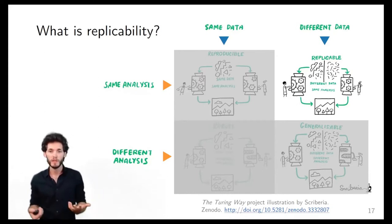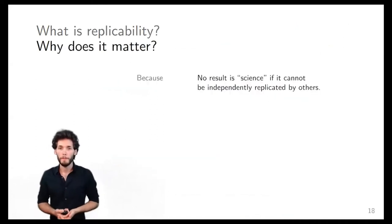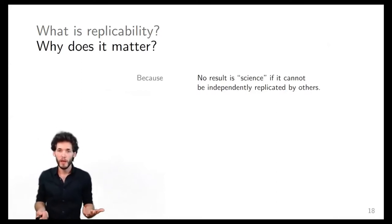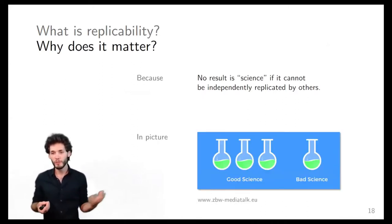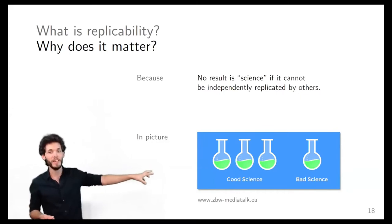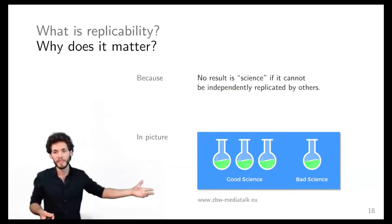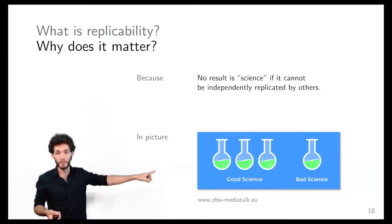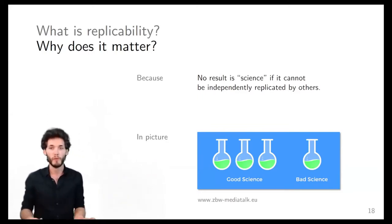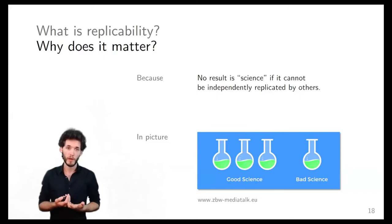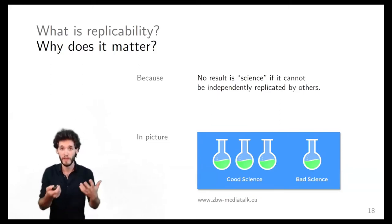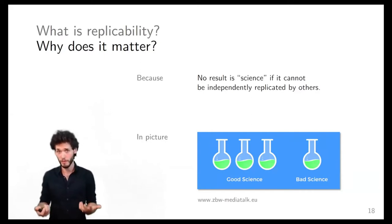Why does replicability matter? Arguably, if you're not able to replicate a result, it's not really science. You can put that into a simple picture: on the right side you have one result which is bright green and great, but if it happens only once, it's bad science. If you can show that you can do it three times, you show that it's not just the outcome of pure luck — there is actually some phenomenon happening. That is considered faithful science.